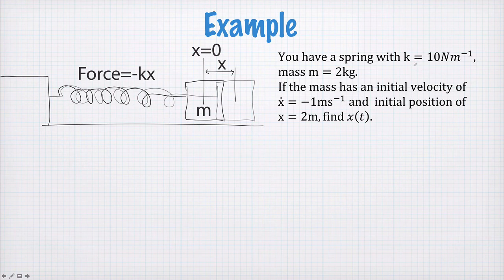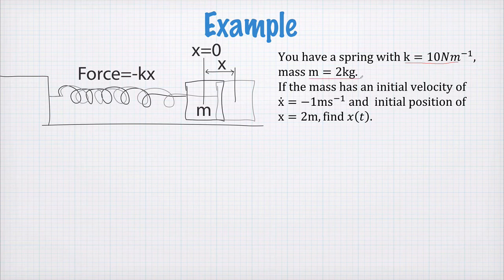Okay so let's work our way through an example here. We'll start with a spring that has a constant of 10 N/m⁻¹, mass of 2 kg. The initial velocity of the mass is negative 1 m/s. So it's moving in the negative x direction. But its initial position is at positive 2 m. Now our job is to find the position x as a function of time.